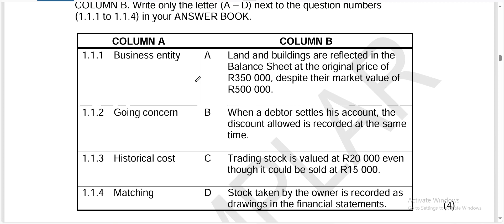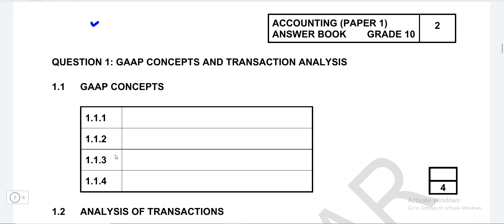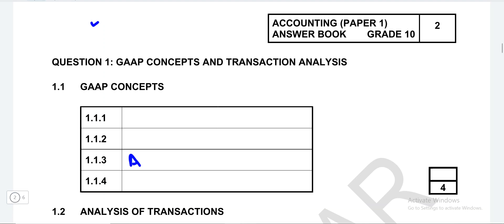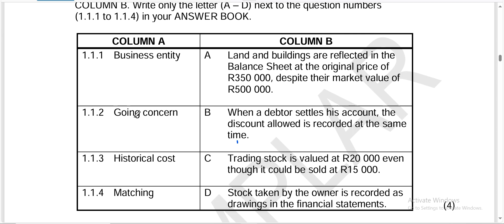They're saying that London buildings are reflected in the balance sheet at the original price of 350,000, despite the market value being 500,000. We know that this speaks about historical costs. So 1.1.3 would have letter A. That's how you know how to choose — once you identify one answer, you are now left with three remaining answers.